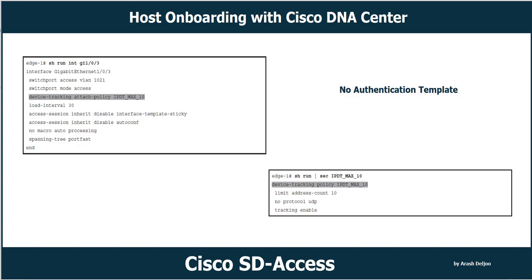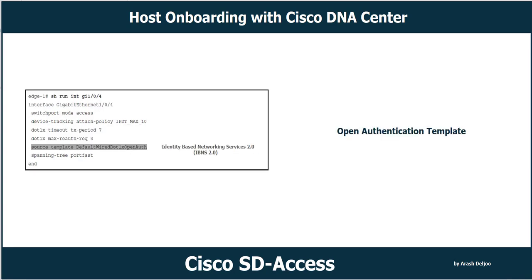IP device tracking is enabled on Layer 2 switch ports during initial device discovery in Cisco DNA Center. The next template is open authentication. As you know, open authentication always allows traffic whether authentication passes or fails. With the open authentication template selected, the fabric edge ports are configured in monitor mode. Here you can see the configuration on GigabitEthernet 1/0/4: the source template applied is 'DefaultWired_dot1x_openAuth'.